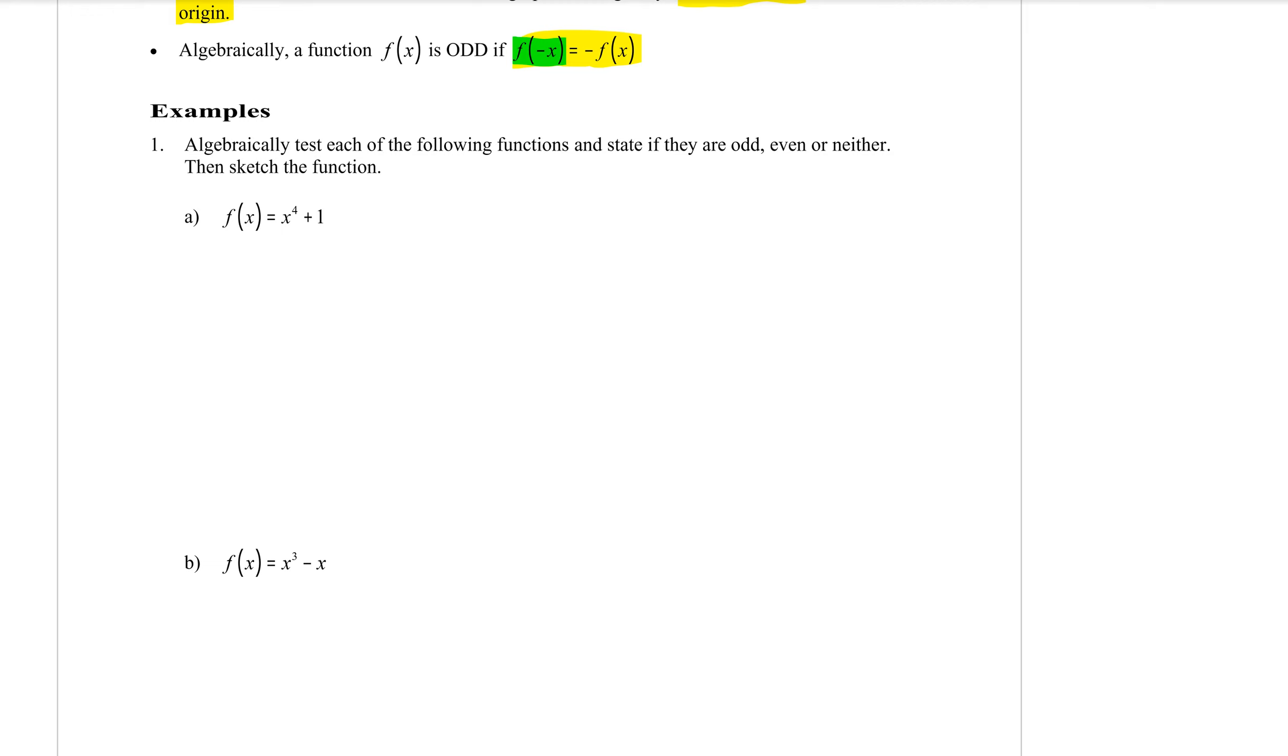Start by subbing in f of negative x. That means everywhere where there's an x in the equation we replace it with a negative x. So that would be negative x to the power of 4 plus 1.